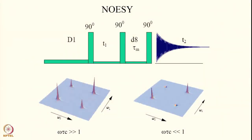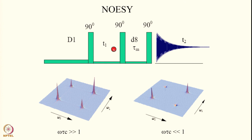Therefore, the two-dimensional spectrum represents the transfer process. In the NOESY experiment, you start with the relaxation delay, do some preparation such as proton saturation, then 90°–T1–90°–tau_m (mixing time, indicated as D8)–90°, and collect data as a function of T2. Two-dimensional Fourier transformation produces a spectrum with diagonal peaks and cross peaks. The cross peaks appear either because of the dipolar interaction or because of the exchange process between the two sites.